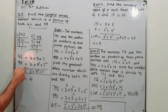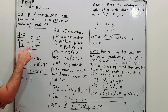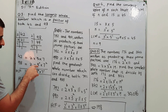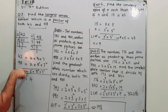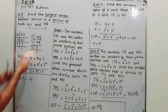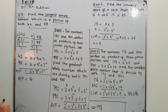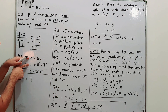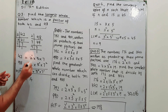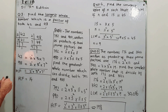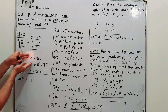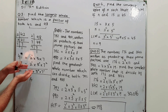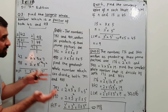For HCF, we take a number from each column with the lower power. From the column of 2 we have 2¹ and 2¹ — they are equal, so take out 2¹. When powers are equal, take it as it is — you don't have a choice.